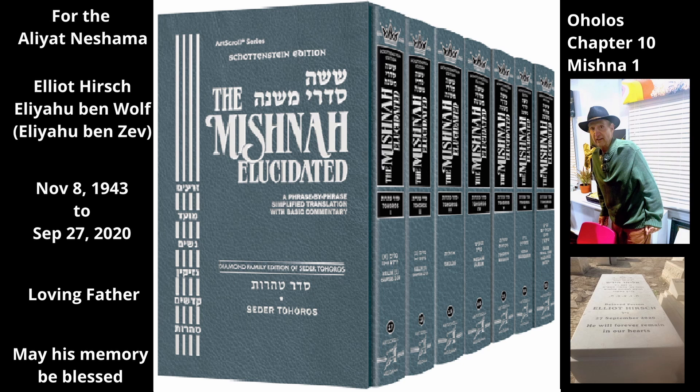In the next case, someone standing on the roof steps on the opening and covers it with his foot. Whether the source of tuma is in the house, i.e. under the roof, or opposite the opening, if someone places his foot over the opening, covering it completely, he combines the tuma. That is, his foot forms an ohel over the space beneath the opening, which combines with the ohel under the roof. Everything in the house is now in one ohel.